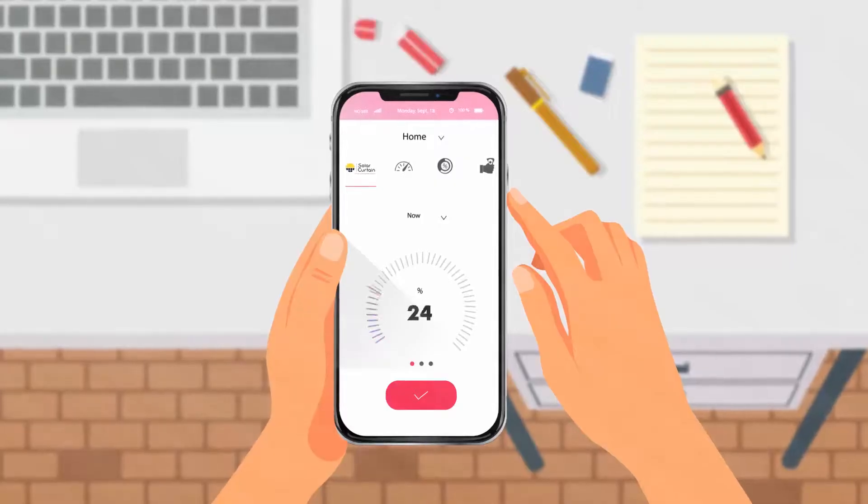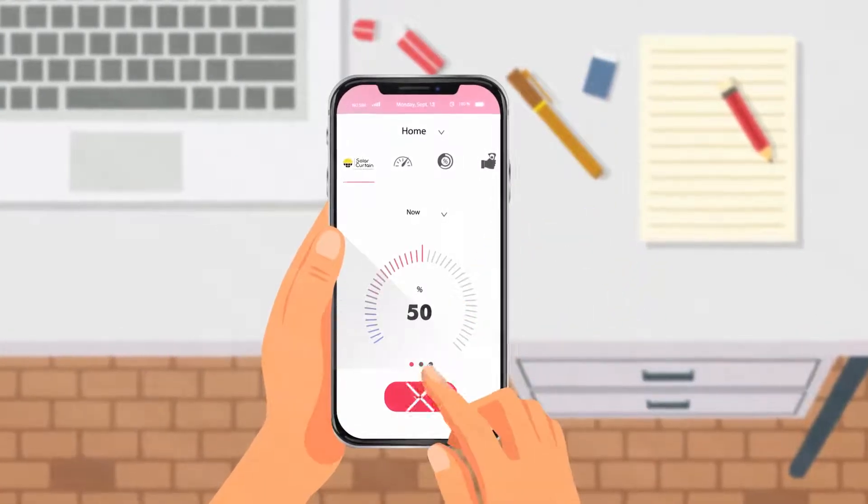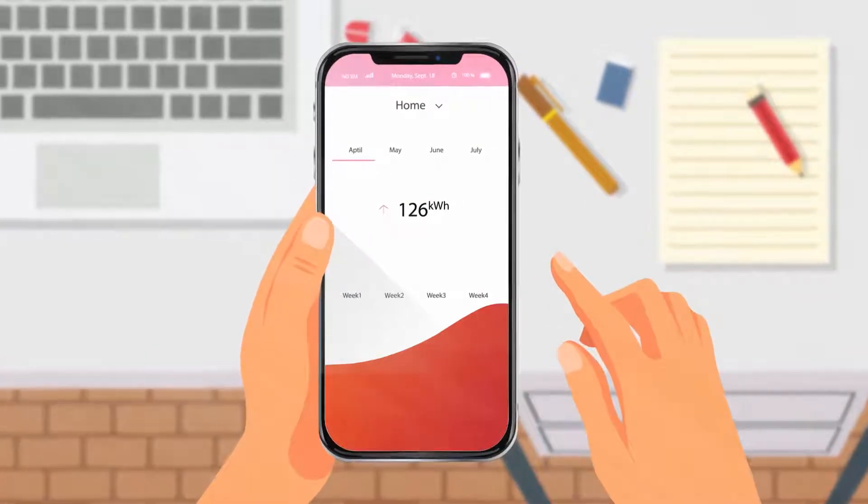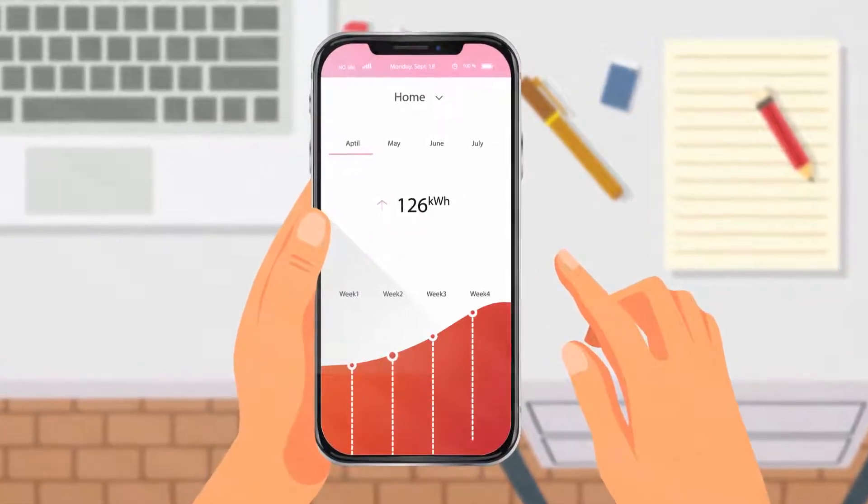You can control the solar curtain at your fingertips. Just download the app in your phone and easily monitor the energy it produces and how much you save in your electricity bill.